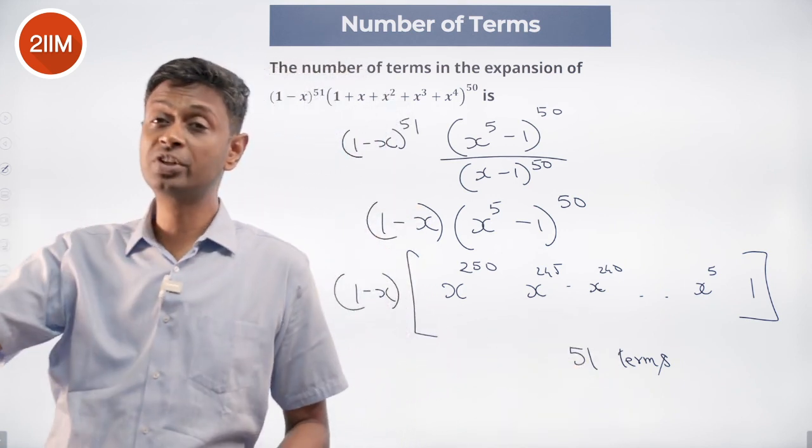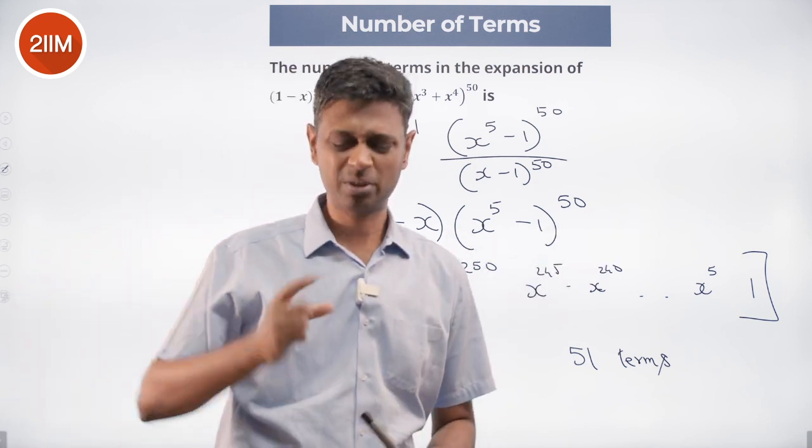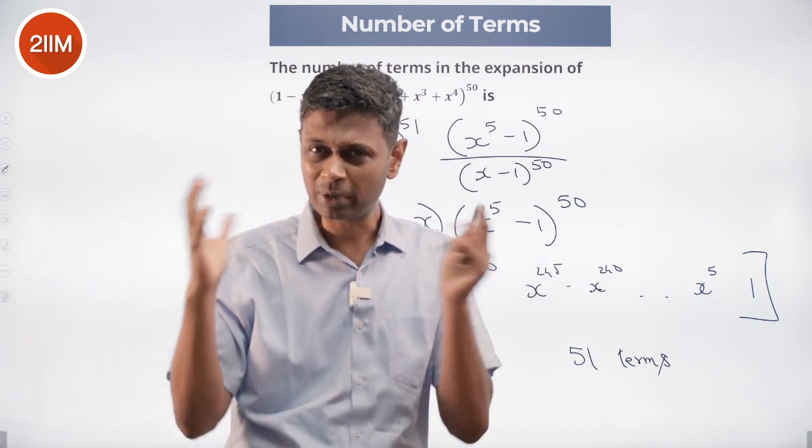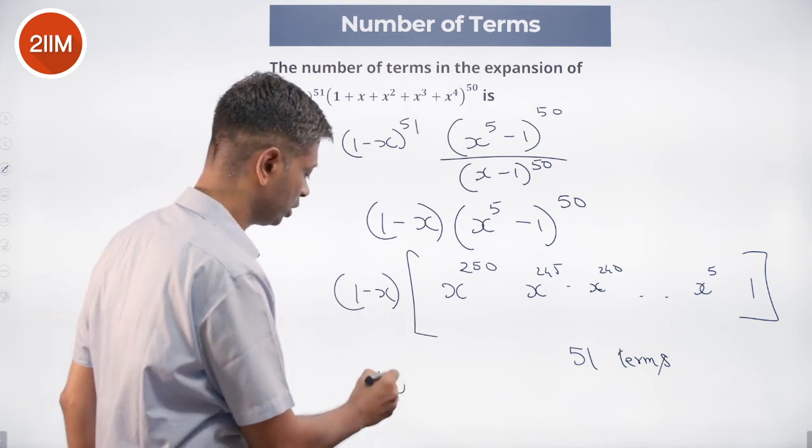All 102 coefficients will be different. These are all steps of 5. These are all steps of 5 plus 1. There is no overlap at all. So there will be 51 plus 51, 102 terms.